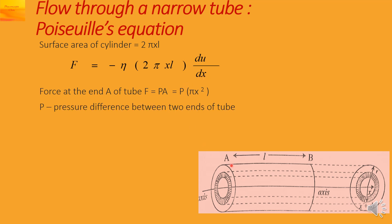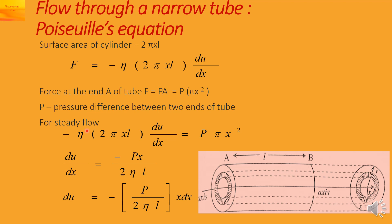The force at end A of the tube will be pressure into area. The area is pi x squared, so the force is P into pi x squared, where P is the pressure difference between the two ends. For steady flow, both forces should be equal, so we equate both formulas.